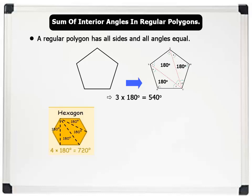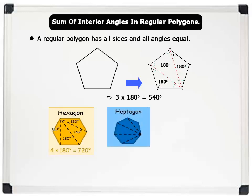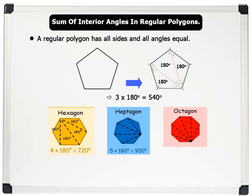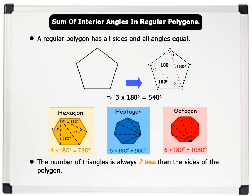A heptagon with seven sides has five triangles, and the sum of interior angles equals five times 180, which equals 900 degrees. An octagon with eight sides has six triangles. Notice that in each case the number of triangles is always two less than the number of sides. Hence we can use the formula (n minus 2) times 180 degrees to find the sum of interior angles of any polygon, where n is the number of sides.